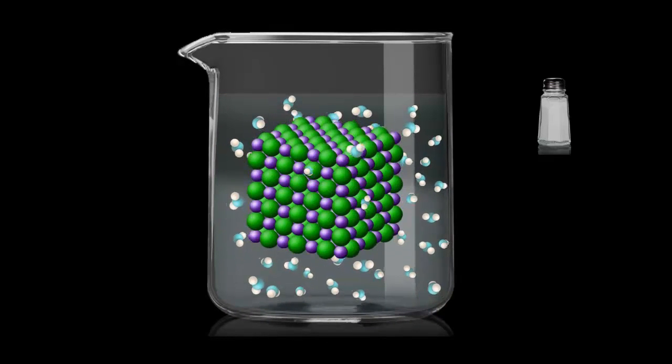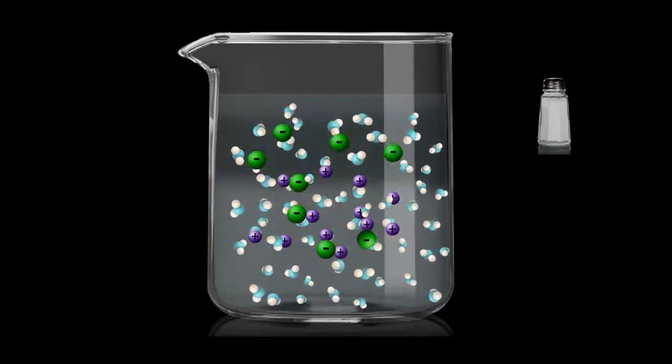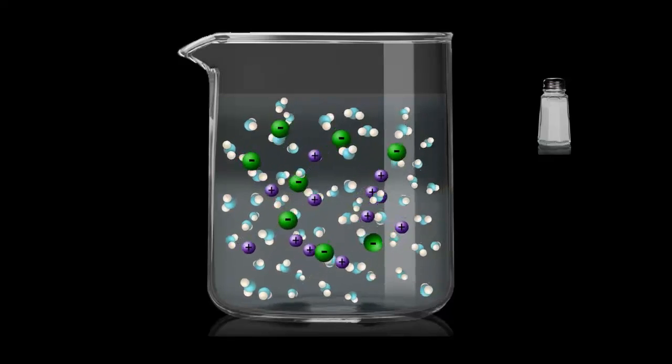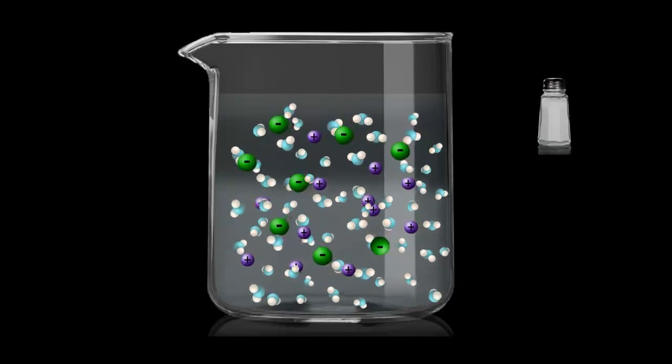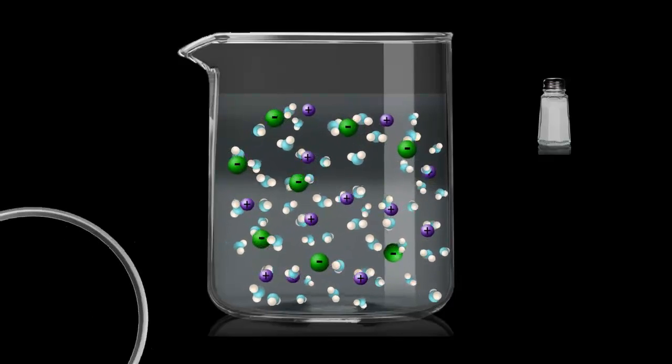The salt crystals are made up of positive and negative ions. The water molecules have portions that are partially positive, the hydrogen atoms, and portions that are partially negative, the oxygen atom.